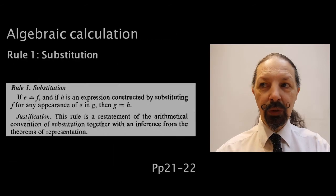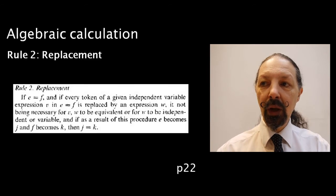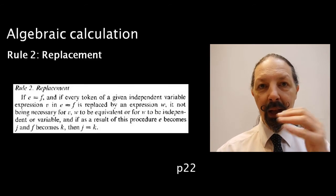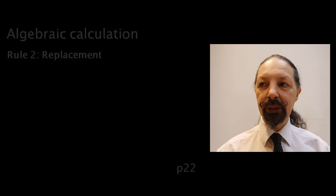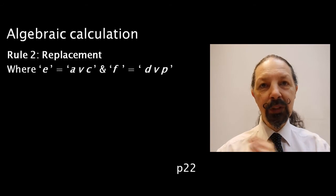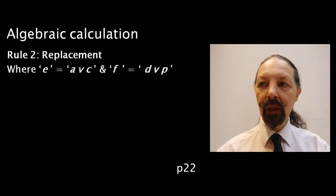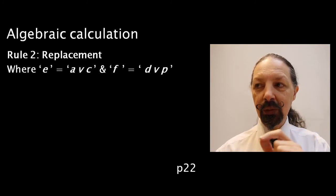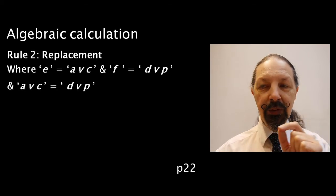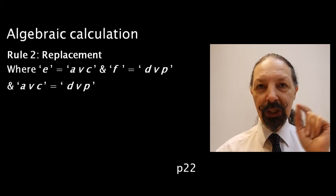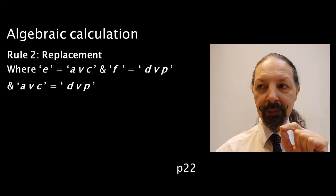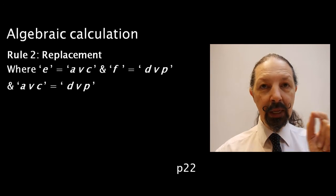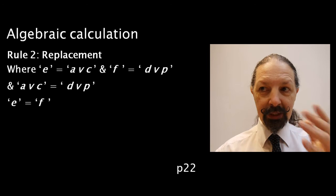What about rule 2, replacement? Well, again, let me take you through my rewording of it, and I'll compare it with Spencer Brown's wording. Where E is equal to AVC, and F is equal to DVP, and AVC equals DVP, and note that both expressions have a common term, V. E equals F. Stands to reason.